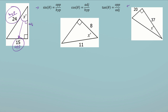I'm going to circle the two sides I have information for, which in this case is the opposite and the hypotenuse. I need to figure out which trig function has both opposite and hypotenuse in it — that's sine. So I have sine of x equals the opposite, which is 15, over the hypotenuse, which is 24.